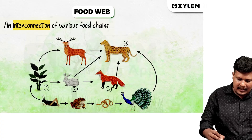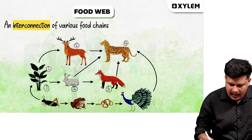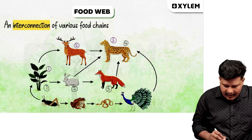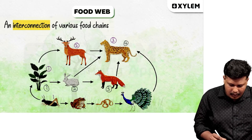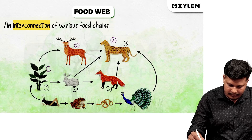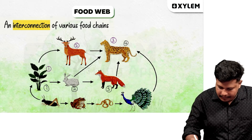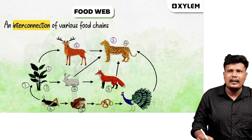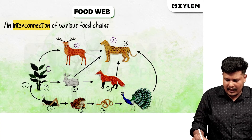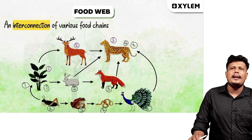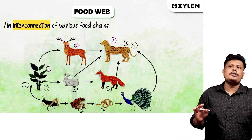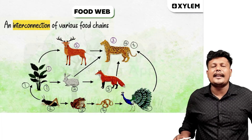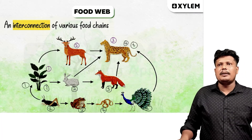The green plant is at the first position of the food chain. Another example: grass — insect — frog — snake — peacock — leopard. That is also a food chain. When there are a few combinations of food chains, we call it a network. That network is what we call a food web.